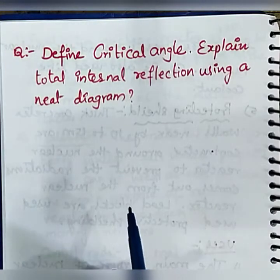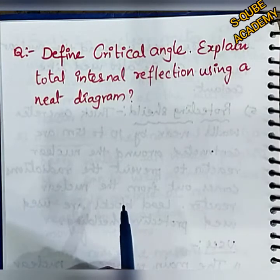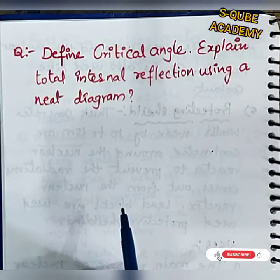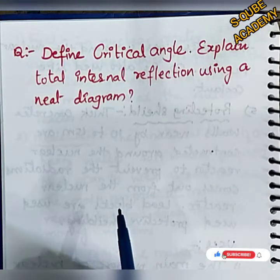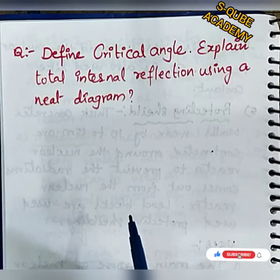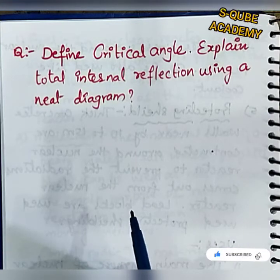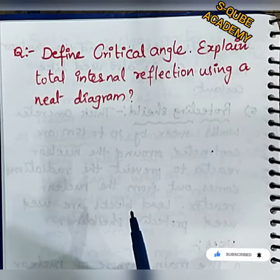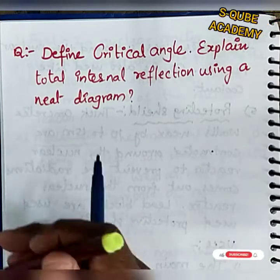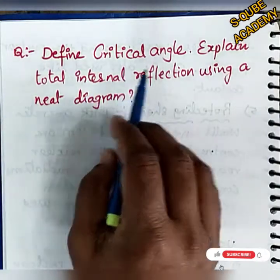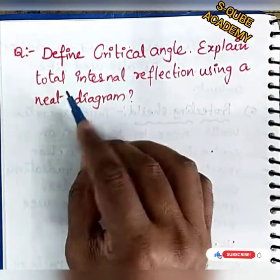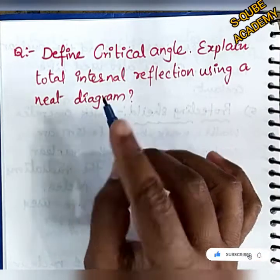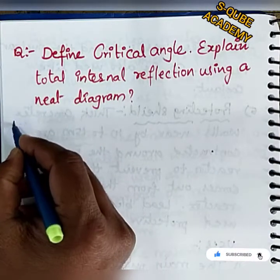Hi, hello my dear students, welcome to S Cube Academy. Today I'm going to explain a 4-mark question for the public examination purpose. This is a very important question asked a number of times for public examination. The question is: define critical angle and explain total internal reflection using a neat diagram.